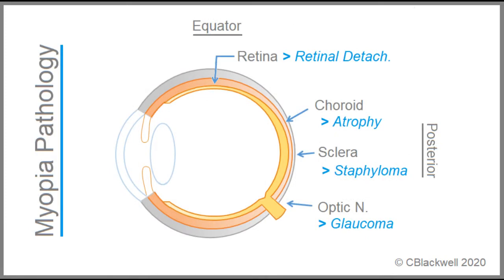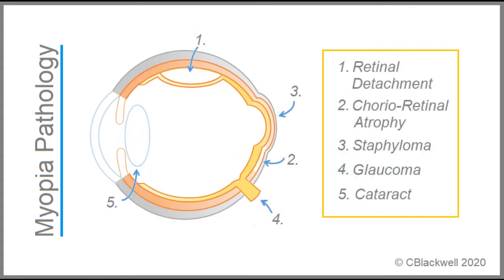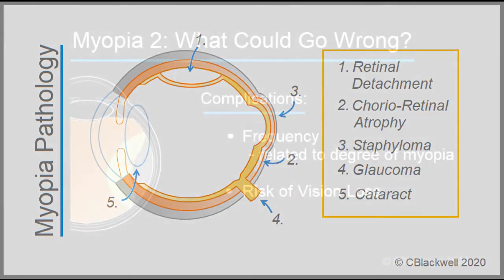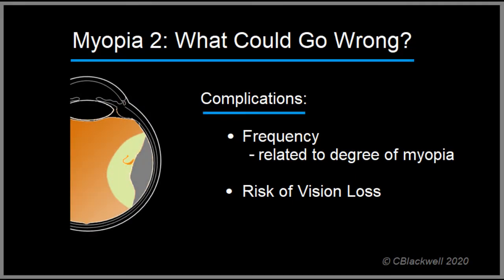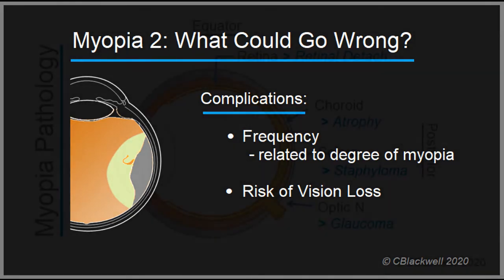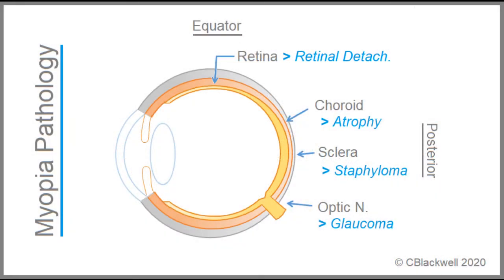These are the recognized consequences of myopia, which we will explore each one in detail. Here are all the consequences assembled in one unfortunate eyeball. The full list includes cataract, but we will not be covering that here. We move on to how often these complications happen, their relation to the degree of myopia, and the risk they pose of vision loss. Knowing frequency and vision risk helps guide decisions about how much a myopic person should be concerned, and what public health policy should be.